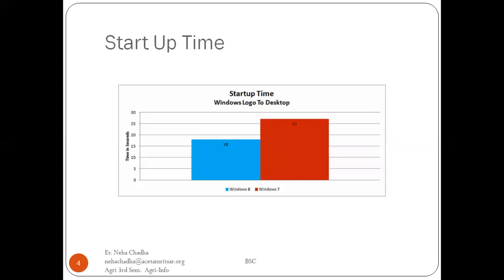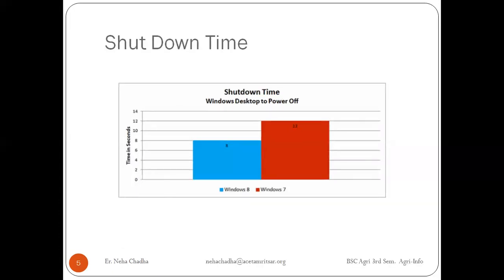First is startup time. If we compare this startup time — that is when the Windows logo will appear on your desktop — Windows 8 takes 18 seconds and Windows 7 takes 27 seconds to display the logo on your desktop. By comparing both, we can find out Windows 8 is taking less time compared to Windows 7. Then shutdown time: when you shut down your system, Windows 8 is again taking less time compared to Windows 7.